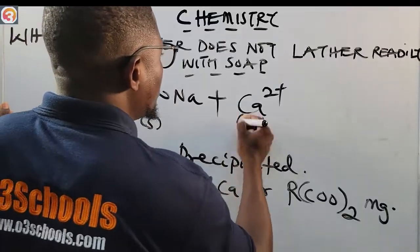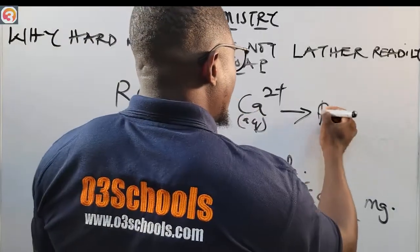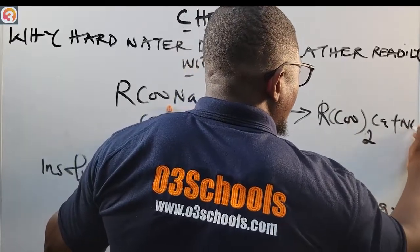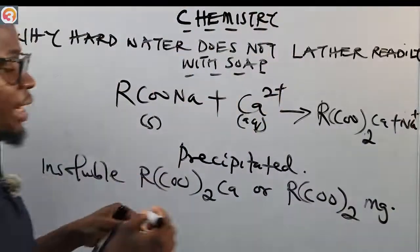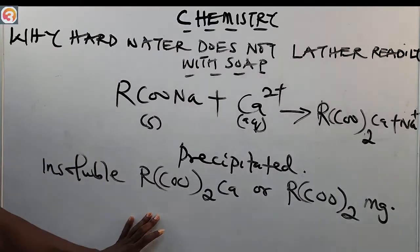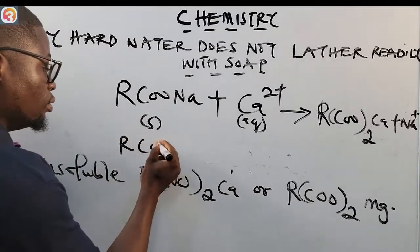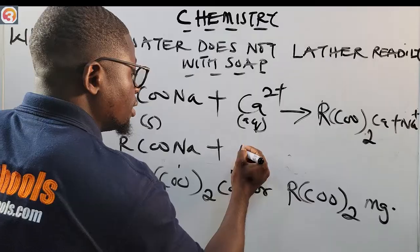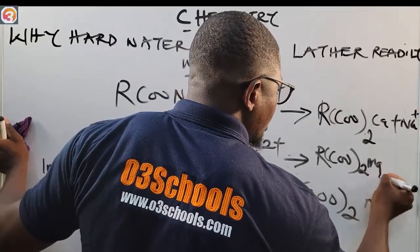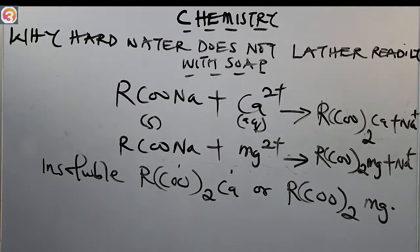The calcium precipitate is insoluble, so it will not give lather. Similarly for magnesium: RCOONa plus Mg²⁺ gives (RCOO)₂Mg plus Na⁺. So that is the same reaction occurring with both calcium and magnesium ions present in hard water.